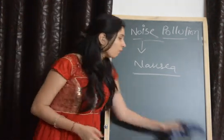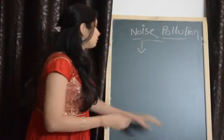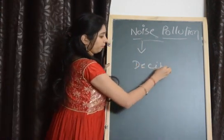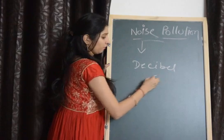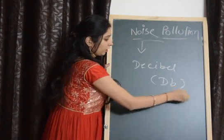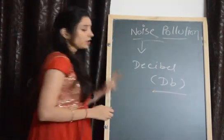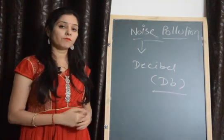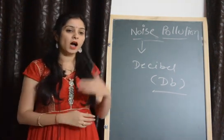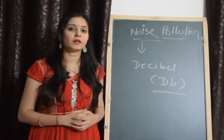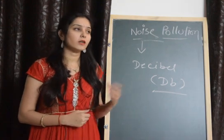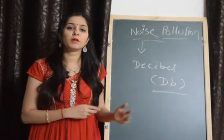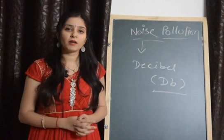The intensity of sound can be measured in decibels. We measure the intensity of sound with the help of decibels, and if there is high noise, the unit of sound will be higher than 85 decibels.